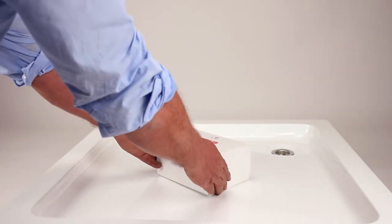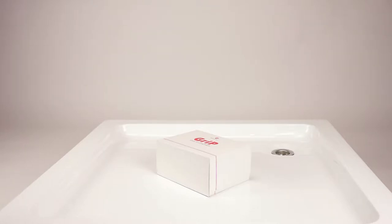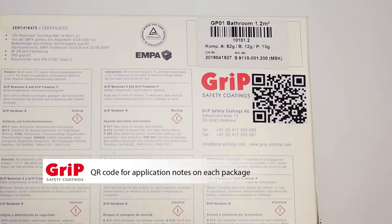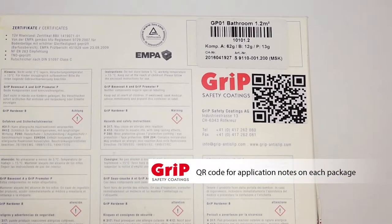Grip anti-slip is an anti-slip coating for bath and shower tubs. Before you apply the coating, please read the instructions for use and safety carefully.